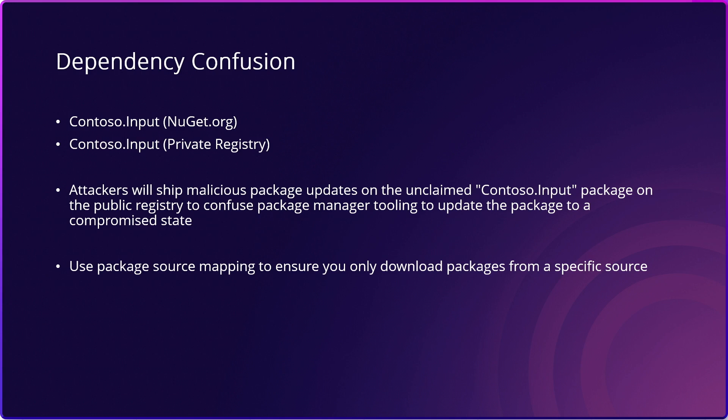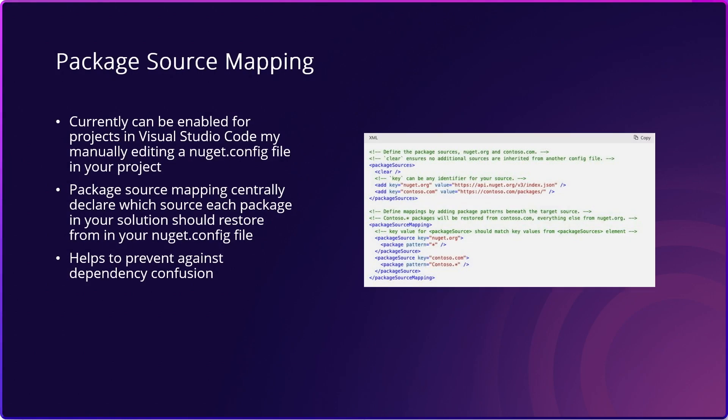The malicious package could contain malicious code that can compromise the security of the developer's system or steal sensitive information. However, NuGet has a lot of checks in place that can prevent this from happening. Package source mapping is a feature that NuGet provides to protect our customers from this issue. It gives you fine-grained control of where your packages are coming from by mapping every package in your solution to a target source. NuGet's solution for safeguarding your software supply chain and protecting against dependency confusion is package source mapping.